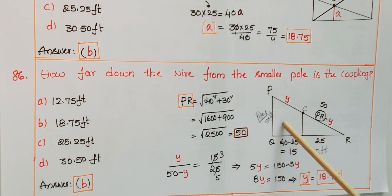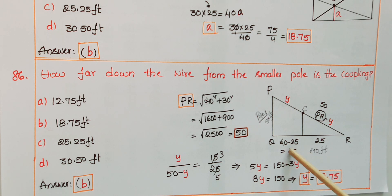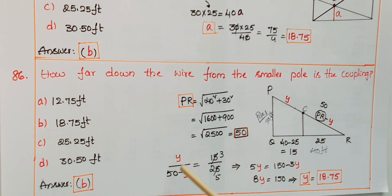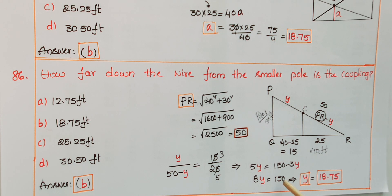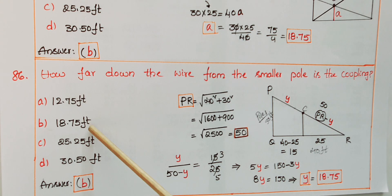These two triangles are similar because both have 90-degree angles and share a common angle. So the corresponding side ratios are equal: y/(50 − y) = 15/25. Cross-multiplying: 25y = 15(50 − y), so 25y = 750 − 15y, giving 8y = 150, therefore y = 150/8 = 18.75 feet. The answer is B.